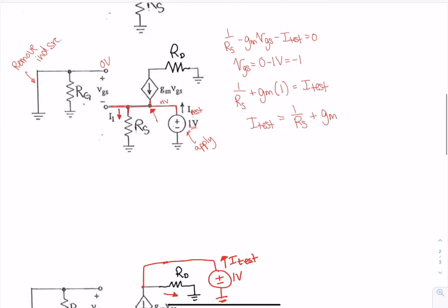And now that I have the value for our test, R_th for this is v_test, whatever I applied, over i_test. And I applied a one volt, so that will be one over one over rs plus gm.